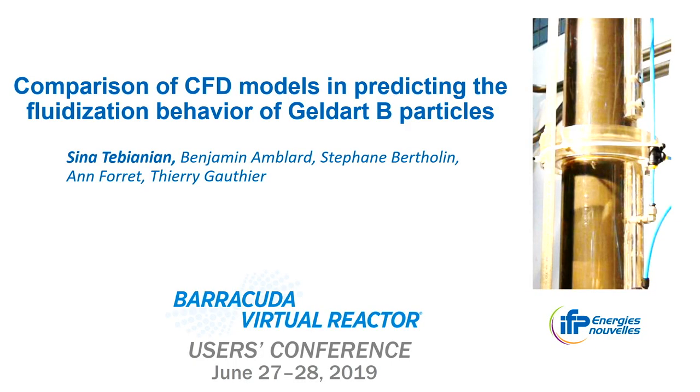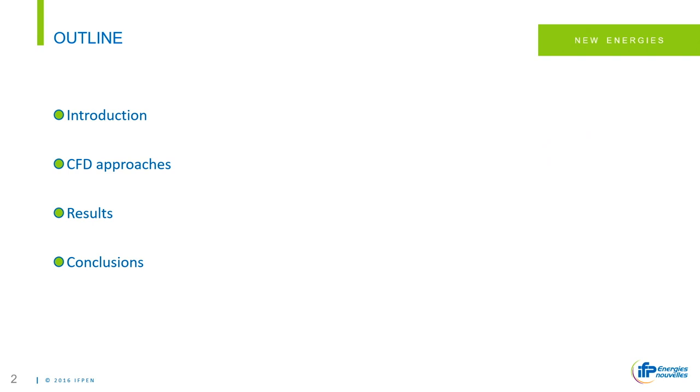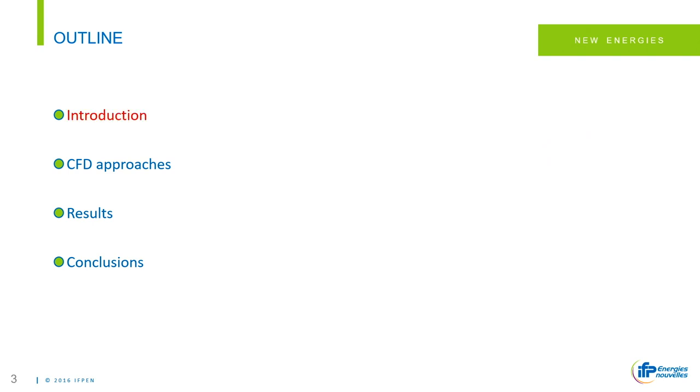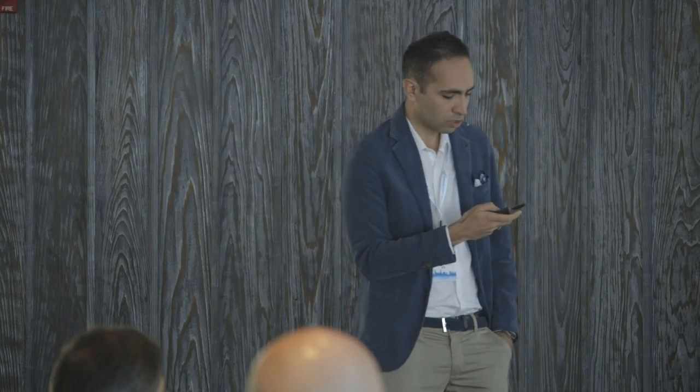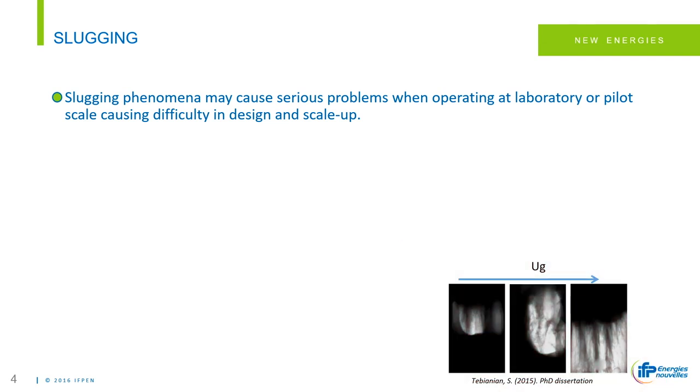The title is: 'Comparison of CFD models in predicting the fluidization behavior of Geldart B particles.' I will focus mostly on Barracuda. I will start with the introduction: why we are interested in simulating slugging. We do not want slugging in our unit to happen. Here I'm showing results from my PhD project where superficial gas velocity is increasing in a sand particle fluidized bed, producing very special behavior with big bubbles inside a six-inch column.